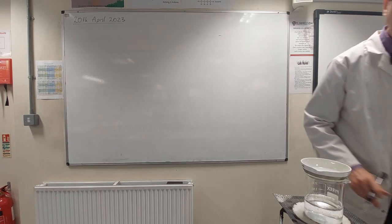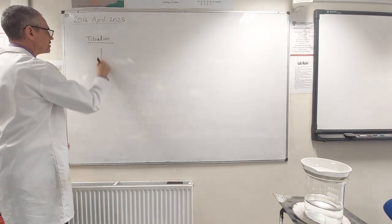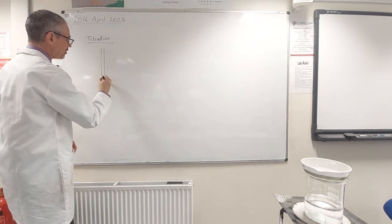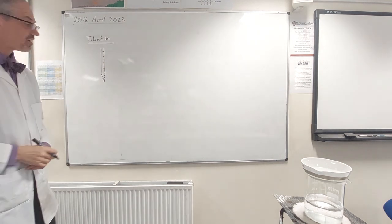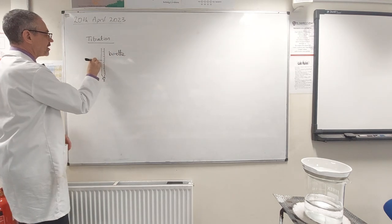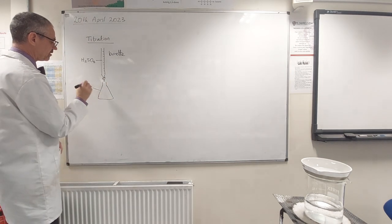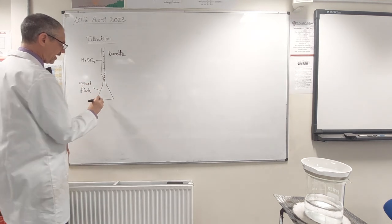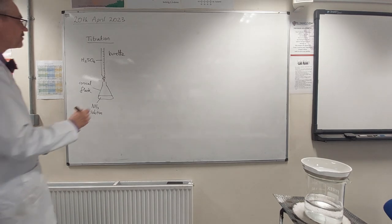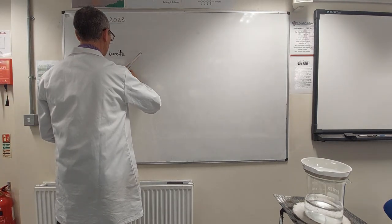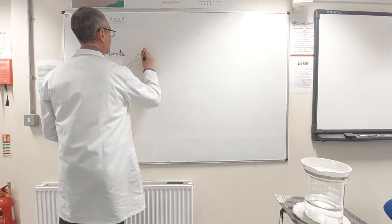Okay so the process that we were using there was called titration. The tall piece of apparatus with the tap at the bottom and markings down the side is called the burette. And I put my sulfuric acid in there. And under that we have a conical flask. And into that I put my ammonia solution. And then lastly I measured my ammonia solution with a pipette.